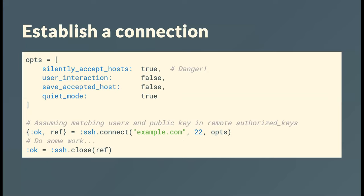Obviously, just silently accepting hosts without checking their fingerprint is something everybody does interactively anyway. But the library provides a callback that gives you the fingerprint of the remote key so you can actually verify you're connecting to the host you think you are. The SSH connect call at the bottom gives you a secure TCP connection to the remote daemon — connecting to example.com on port 22, the standard SSH port.